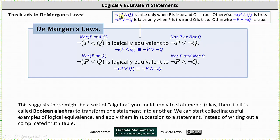This should make sense: the negation of (p and q) is false only when p is true and q is true; otherwise the negation of (p and q) is true — which is the same for the negation of p or the negation of q. The negation of p or the negation of q is also false only when p is true and q is true; otherwise it is true. The second De Morgan's law states: the negation of (p or q) is logically equivalent to the negation of p and the negation of q.